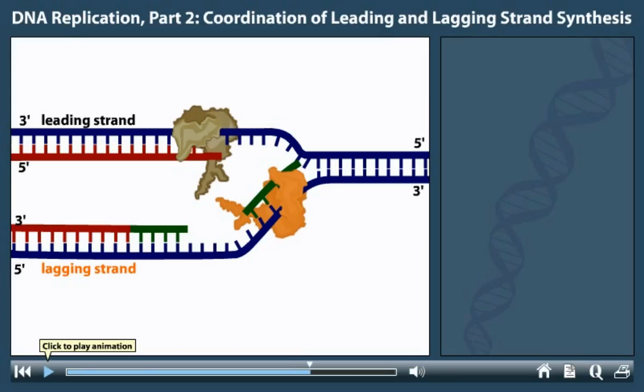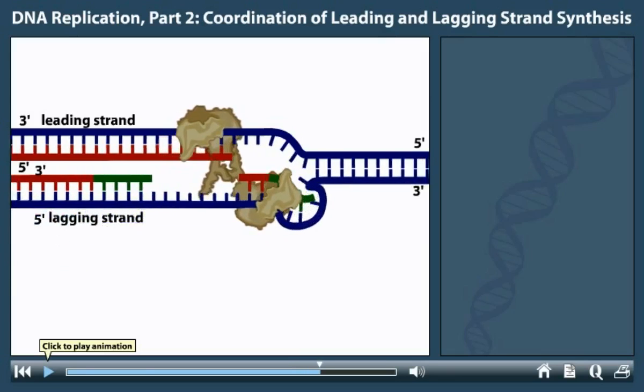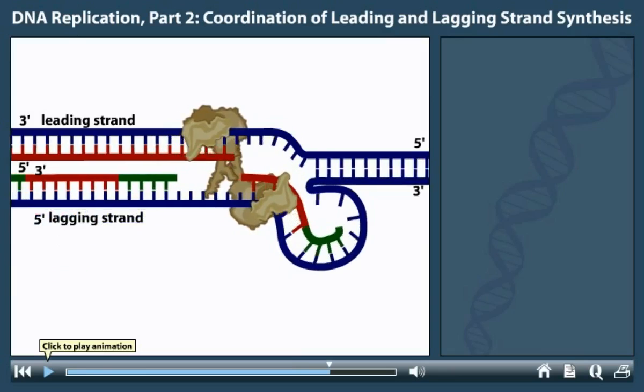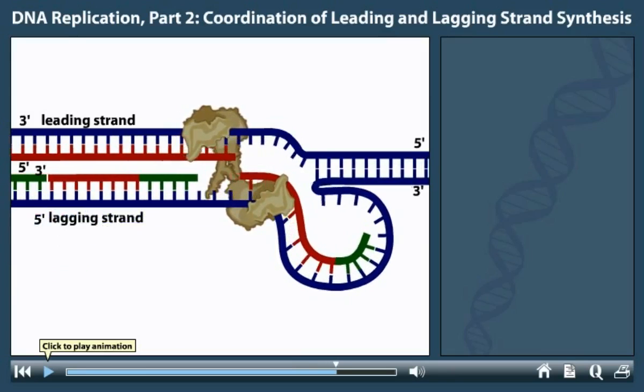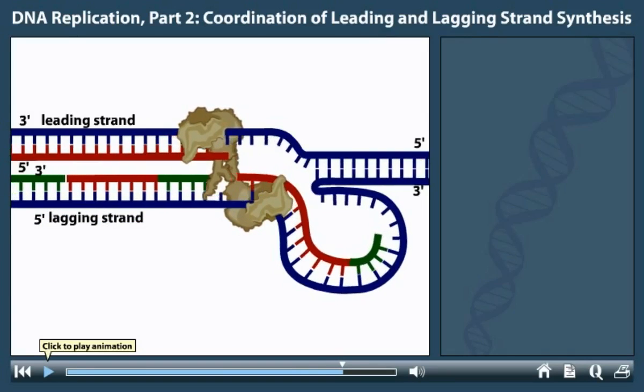By this mechanism, the two polymerases can add nucleotides to the growing strand at the same time, at rates up to 1000 base pairs per second.